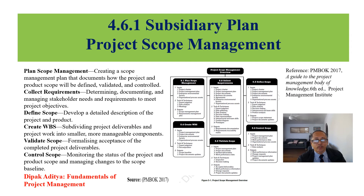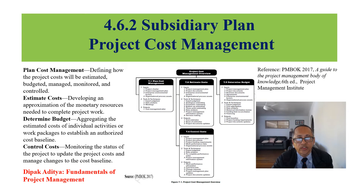Project scope management has six processes: plan scope management, collect requirements, define scope, create WBS, validate scope, and control scope. If scope creep shows up, it means you do not have complete control over the project. There are product scope and project scope. Project cost management has four processes: plan cost management, estimate cost, determine budget, and control cost.